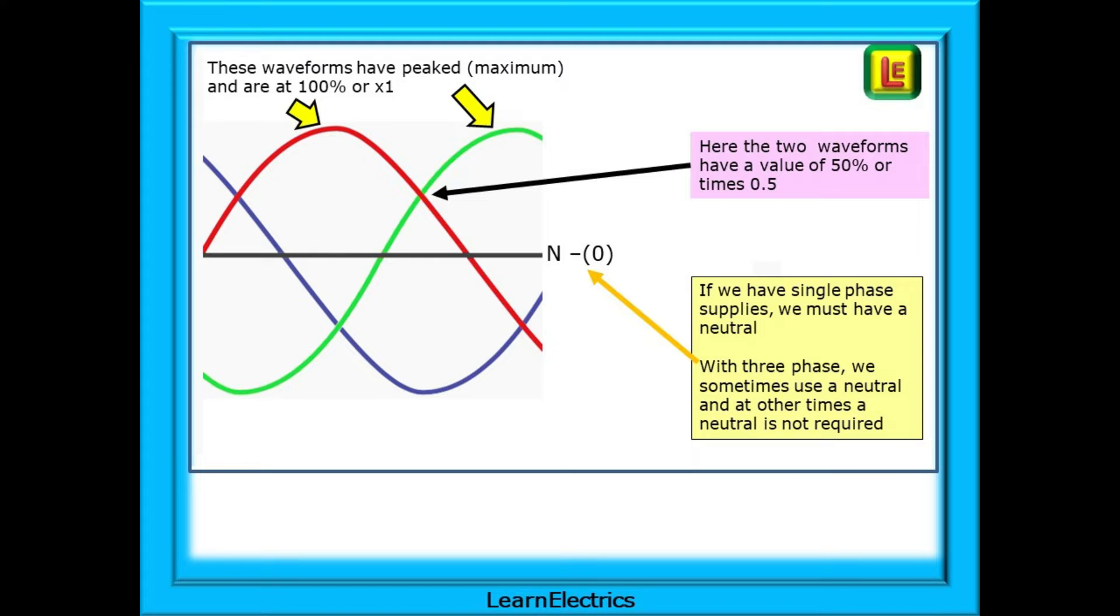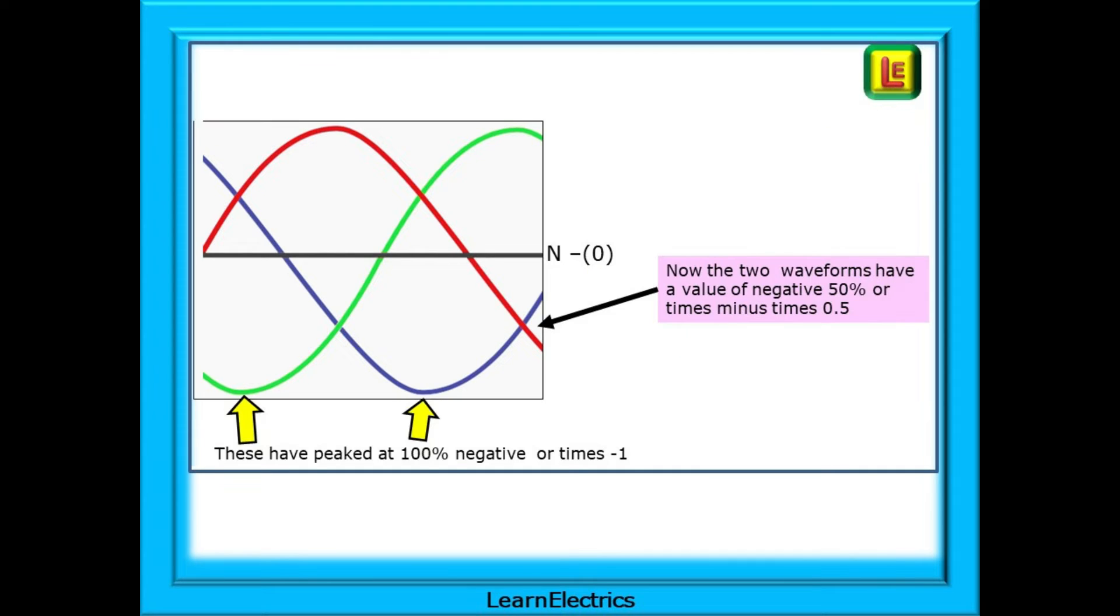If we have a single-phase supply, we must have a neutral. With three-phase, we sometimes use neutral, and at other times a neutral is not required. Here, there are two waveforms at the negative 50% point, or minus times 0.5.